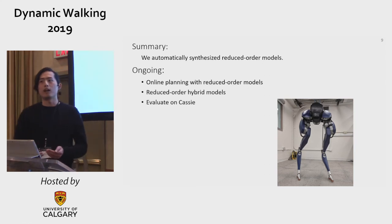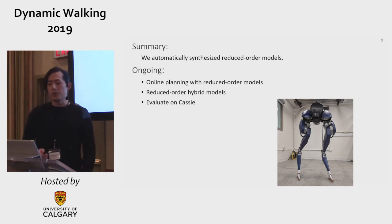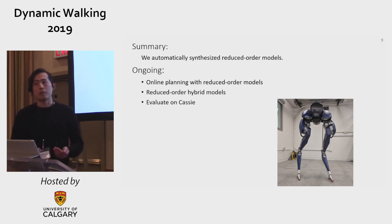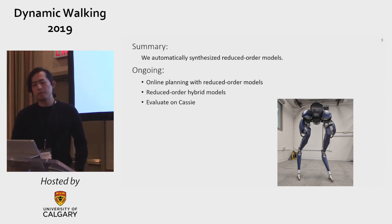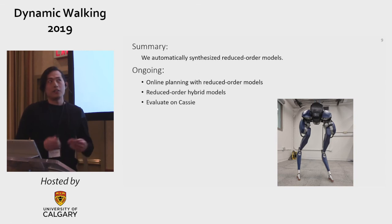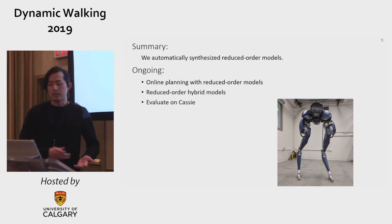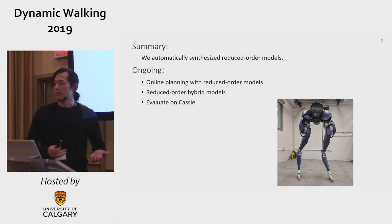In summary, we define the reduced order model by a mapping function and its own dynamics, and we are able to find the optimal reduced order model automatically. This is ongoing work. We are currently planning with this reduced order model — one big reason we love reduced order models is that they allow us to do fast planning. The work shown is on the continuous side of this model, and we want to extend it so that it's hybrid. Finally, we are going to evaluate this on Cassie.